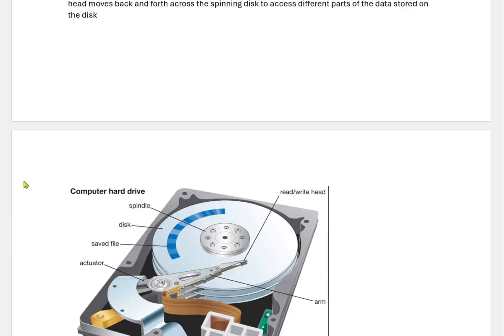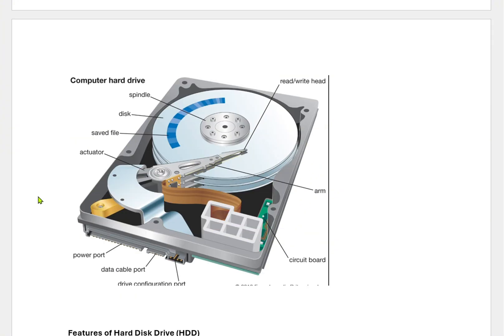Let us see how a hard disk looks from inside. A hard disk has a spindle which holds the disk. Data is saved in zeros and ones. There is an actuator which holds the read-write head, and an arm which also holds the read-write head. There is a circuit port, a power port, and a data cable port — which connects to the interface cables: IDE, SATA, or SCSI.